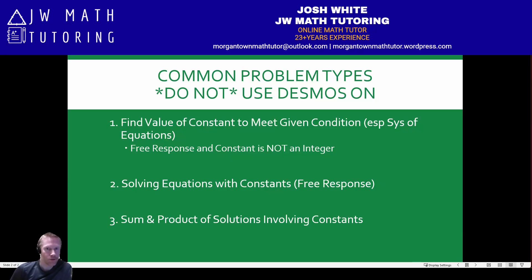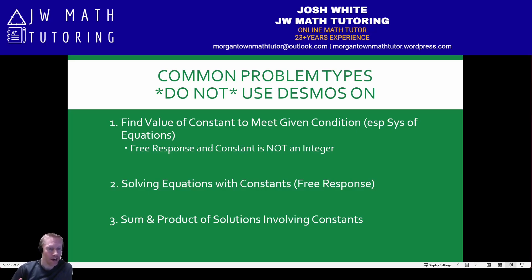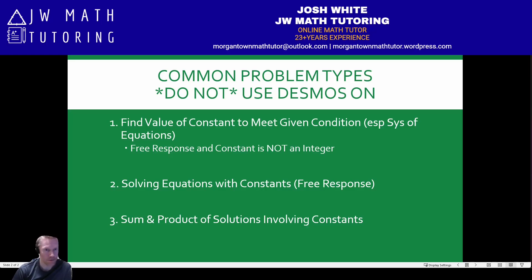The first type is when you have a problem asking you to find the value of a constant that needs to meet some type of given condition. In addition to that, the problem is free response, not multiple choice. Another clue is when the constant is not an integer. Some examples of these types of problems are when you're given a system of equations — and a lot of these typically involve fractions.